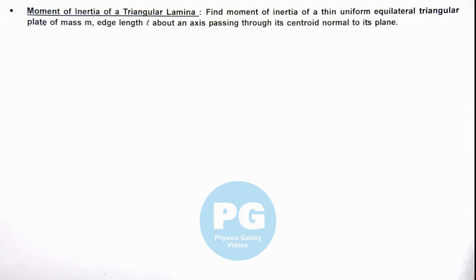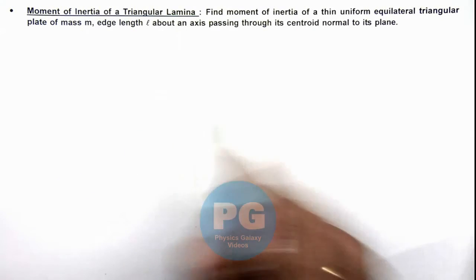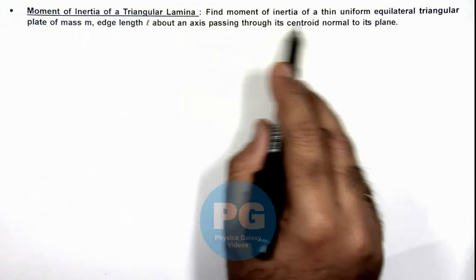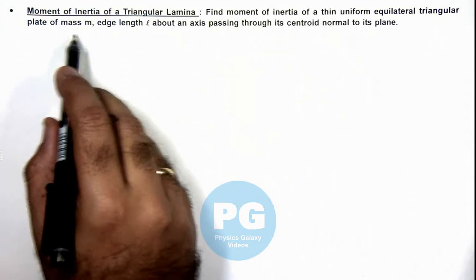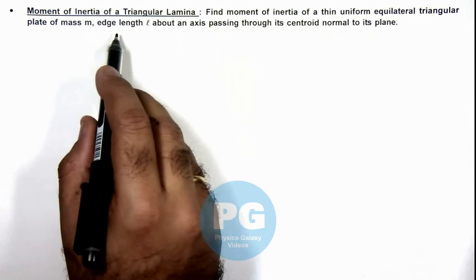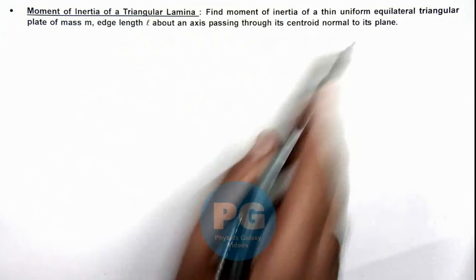In this illustration we'll calculate the moment of inertia of a triangular lamina. Here we are required to find the moment of inertia of a thin uniform equilateral triangular plate of mass m, edge length l, about an axis passing through its centroid normal to its plane.